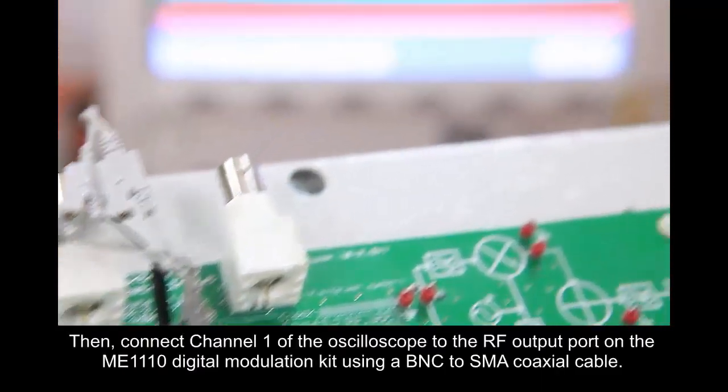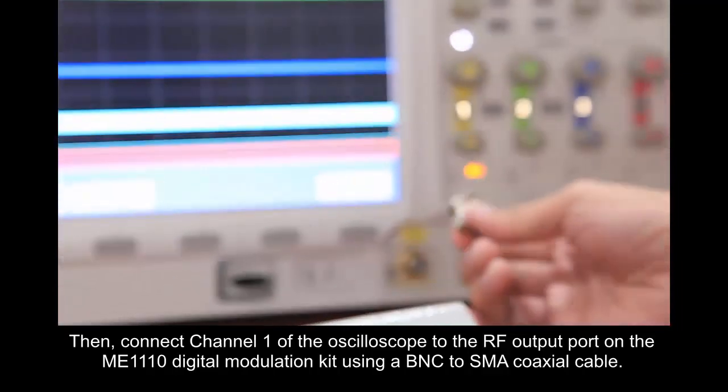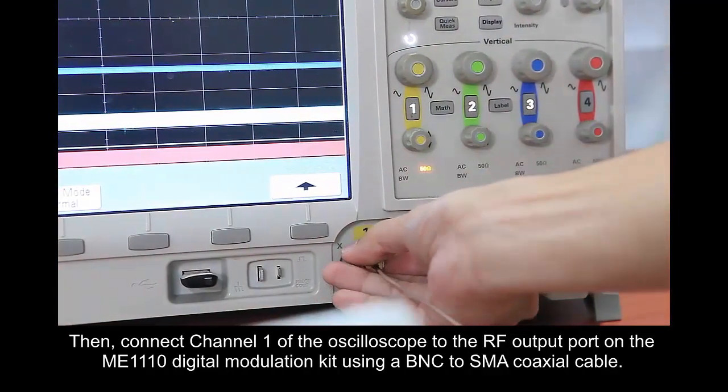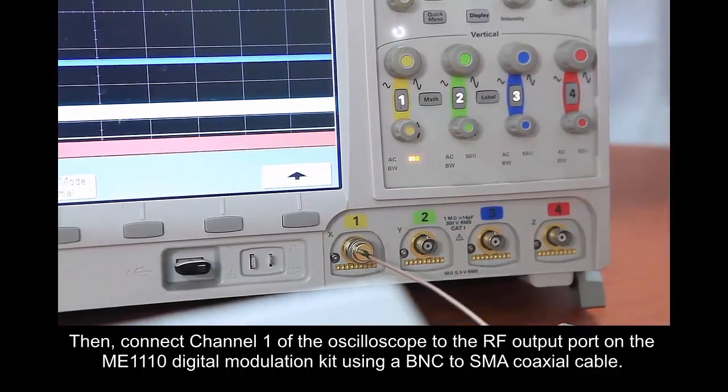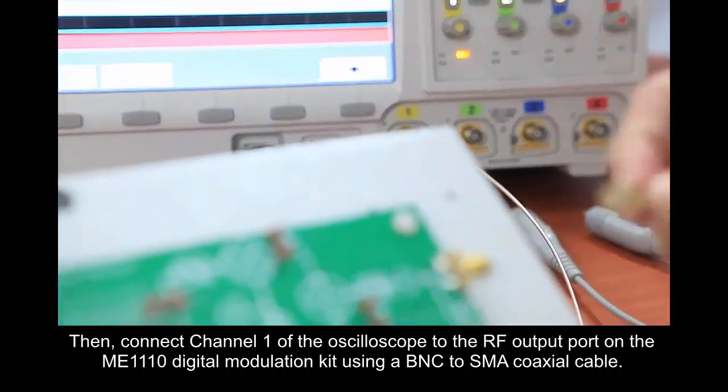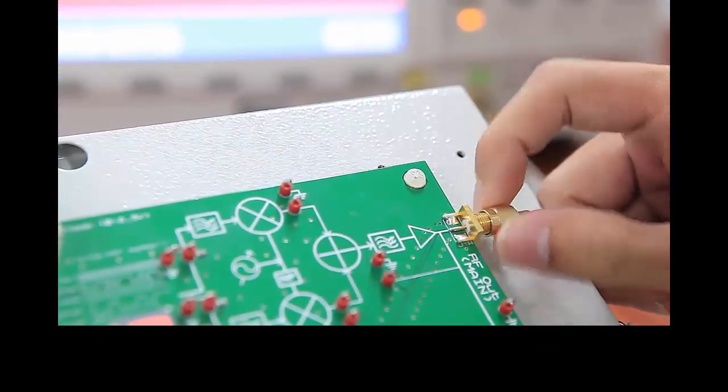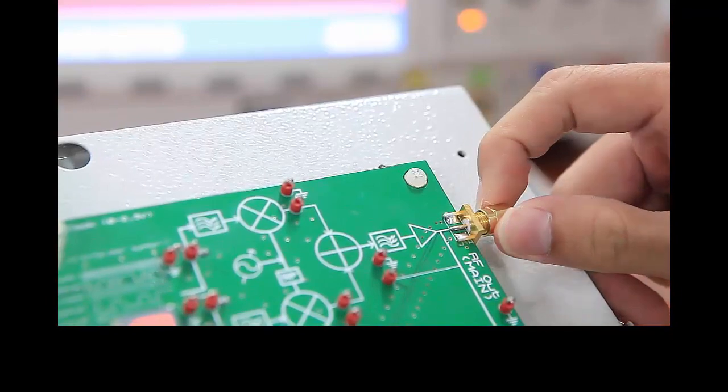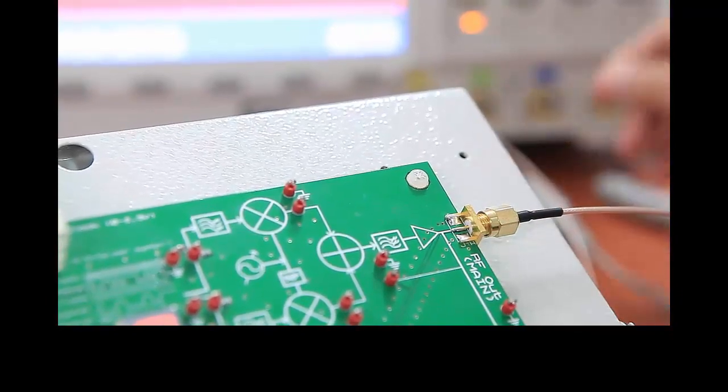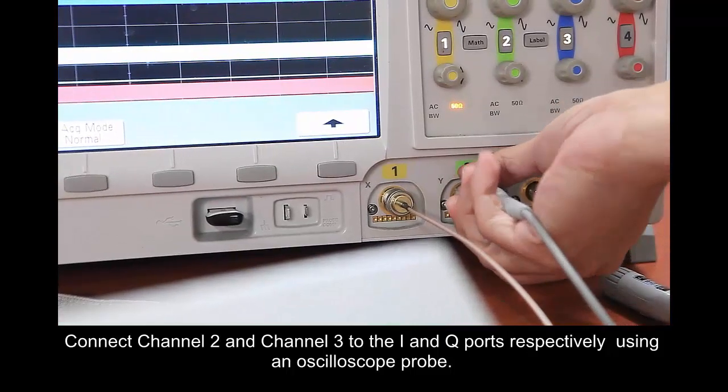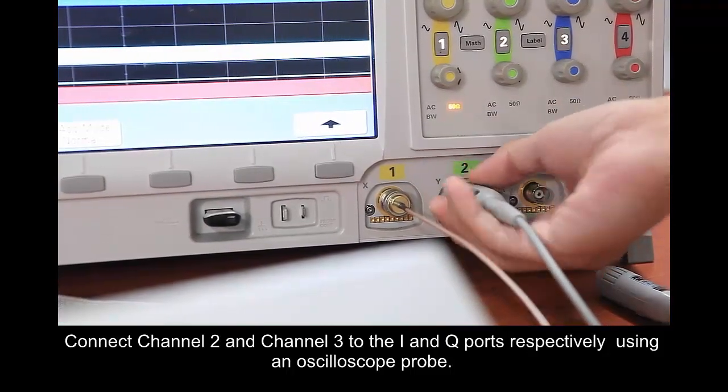Then connect channel 1 of the oscilloscope to the RF output port on the ME1110 digital modulation kit using a BNC to SMA coaxial cable. Connect channel 2 and channel 3 to the I and Q ports respectively using an oscilloscope probe.